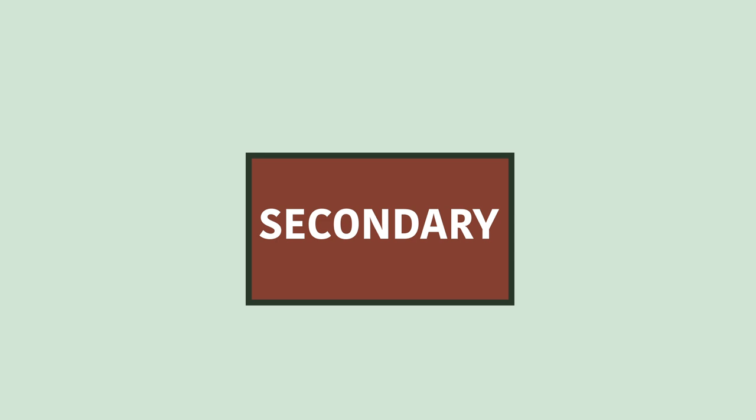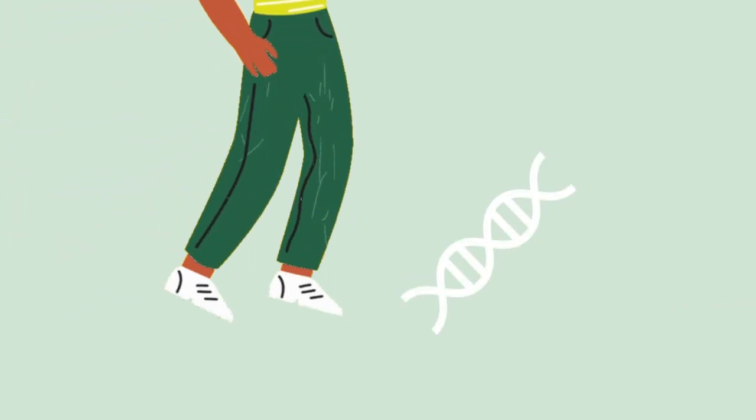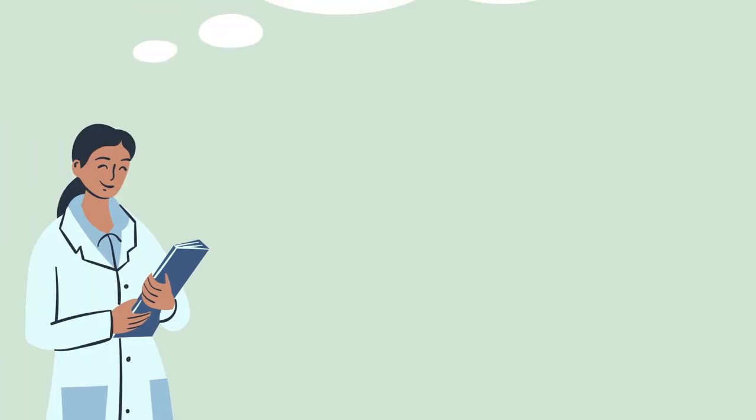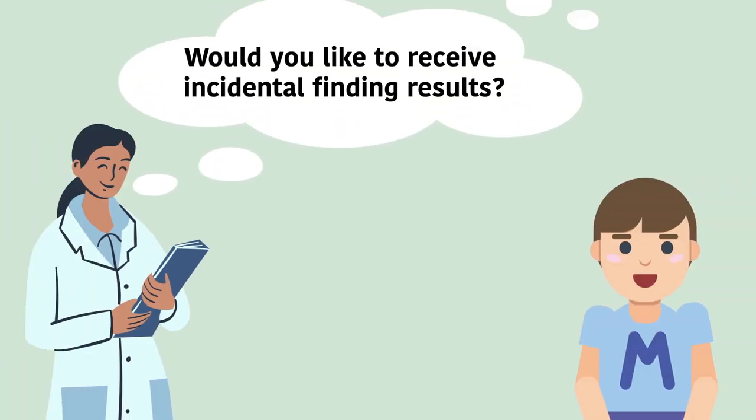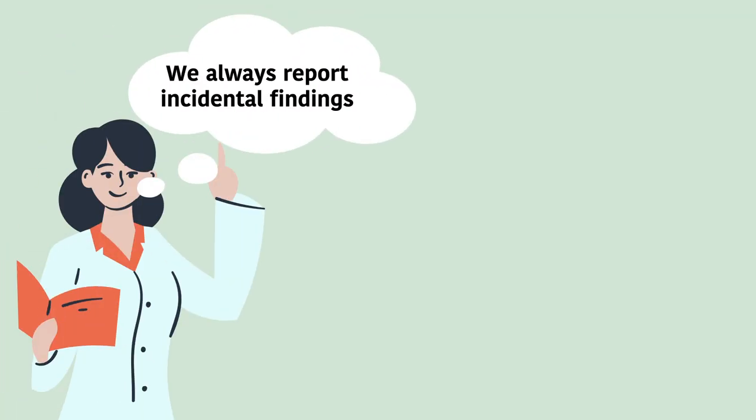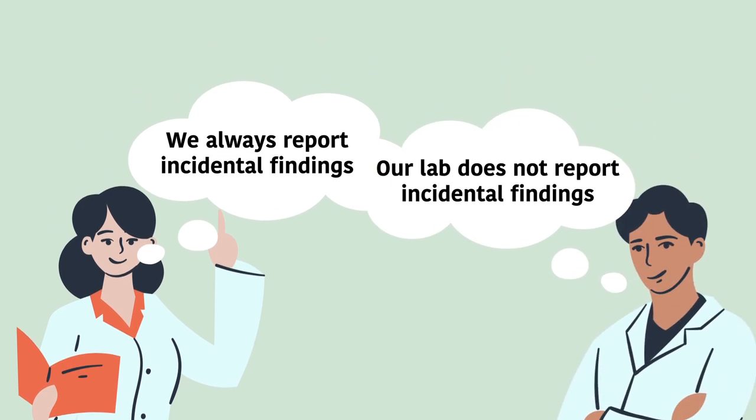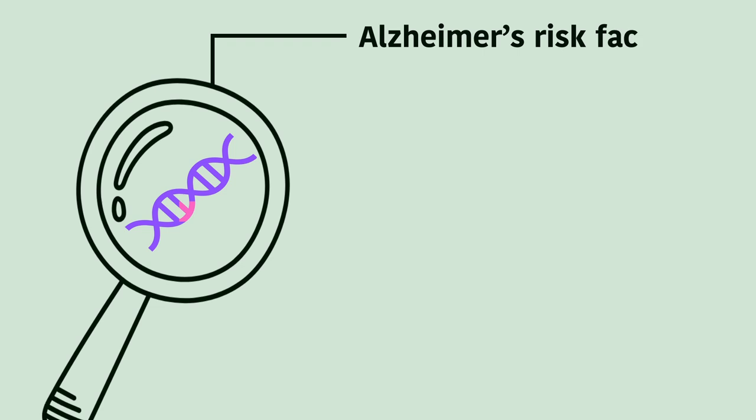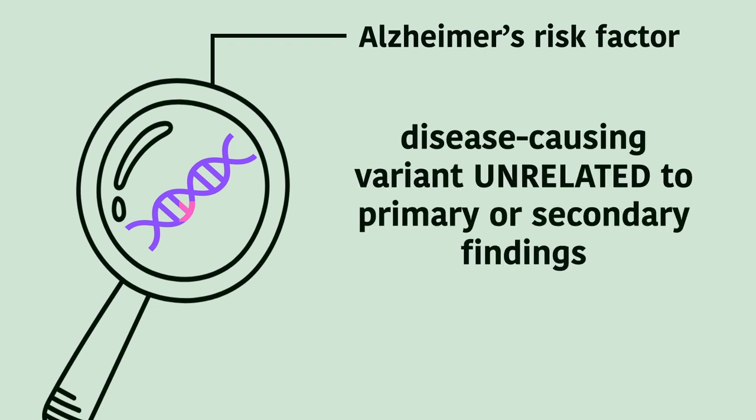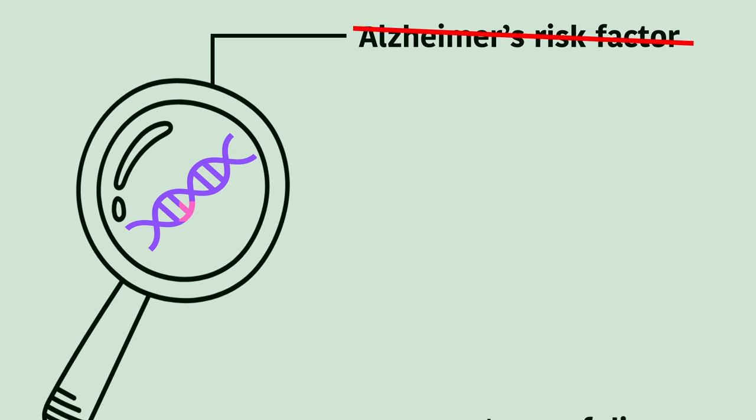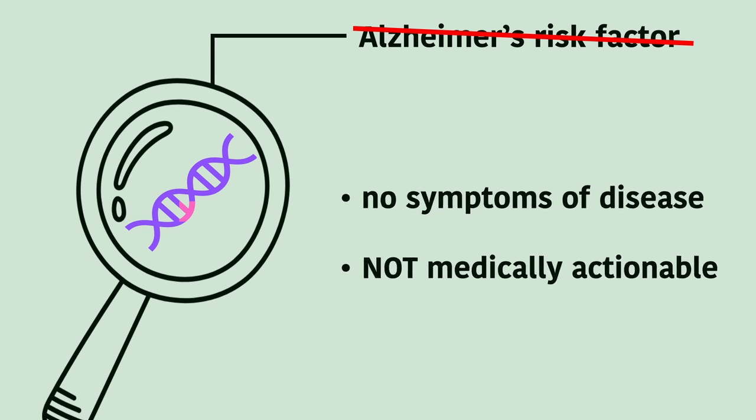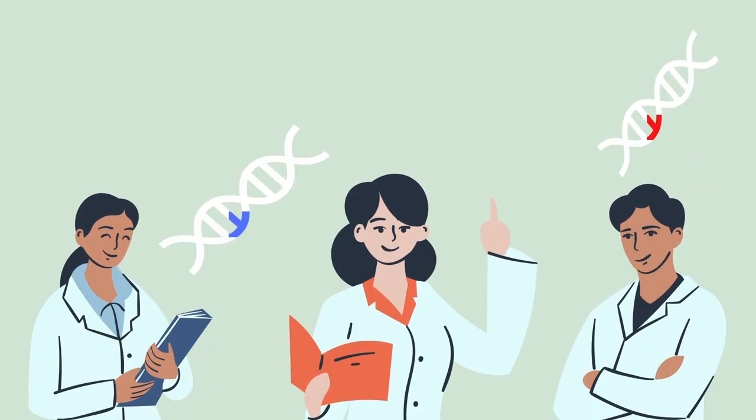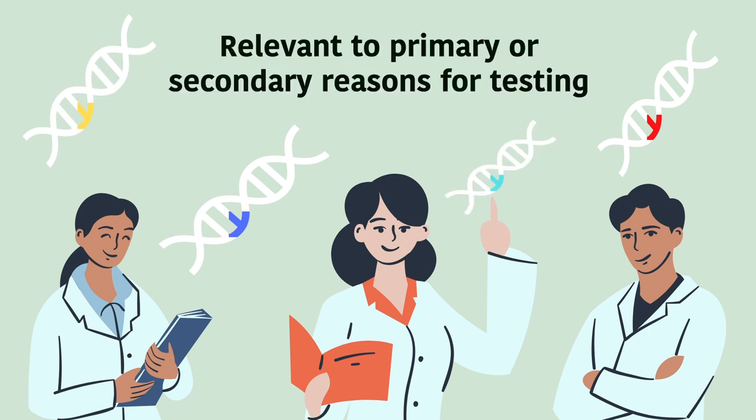In addition to secondary findings that are medically actionable, laboratory staff may stumble upon other unexpected information. These are called incidental findings. Some labs may offer the option to disclose these incidental results if a patient agrees to it. Some labs always report some incidental findings, and some labs report none. Let's dive into what these unexpected findings may be. For instance, the lab may stumble upon a variant that may cause a disease unrelated to either primary or secondary findings. Other diseases are usually not reported since the patient does not currently exhibit any symptoms of this disease and it is likely not medically actionable. For this reason, the laboratory staff try to focus their attention only on the genes that are relevant to primary or secondary reasons for testing.